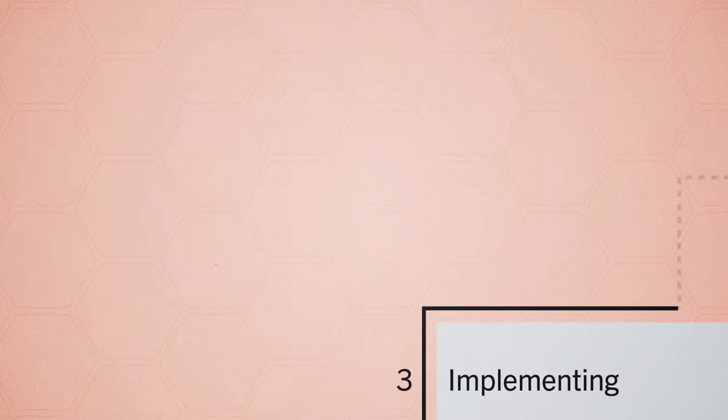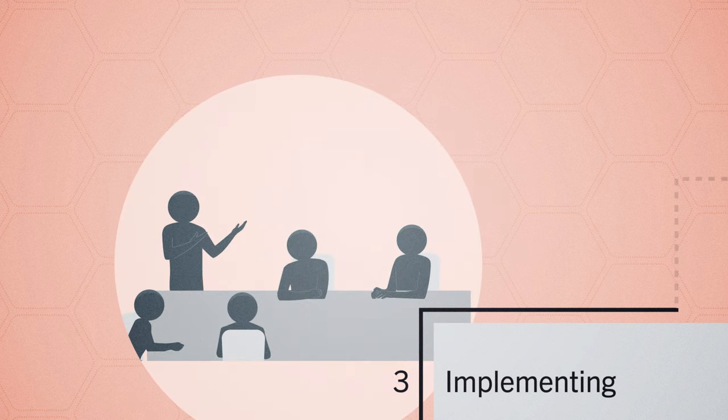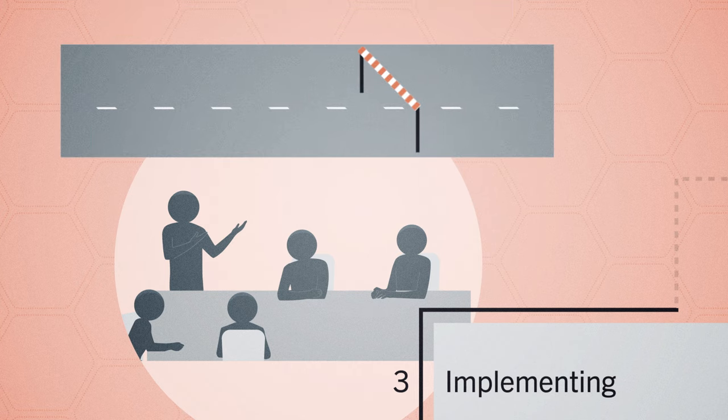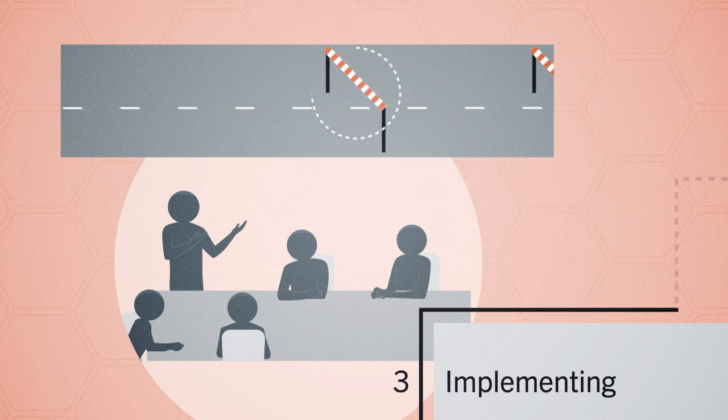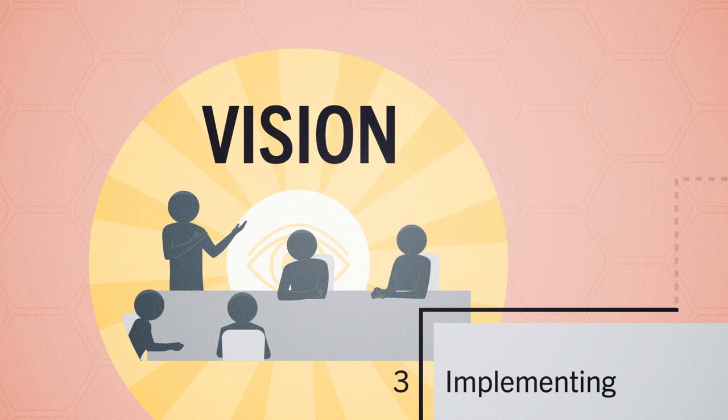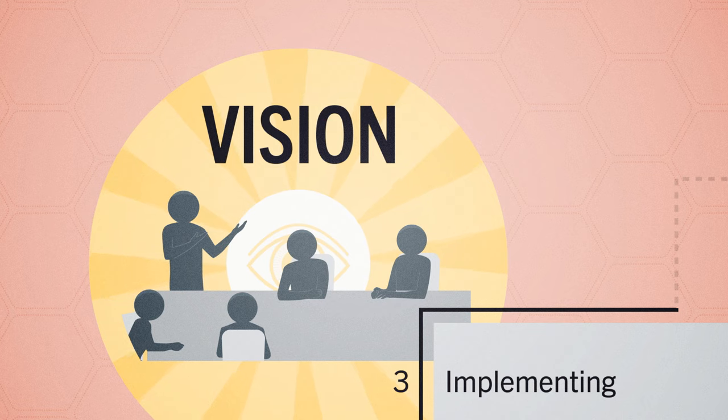Step three is implementing change. During implementation, change managers focus on motivating and empowering employees to achieve the initiative's goals. They should also try to anticipate roadblocks and prevent, remove, or mitigate them once identified. Reiterating the organization's vision is critical throughout the implementation process to remind team members why change is being pursued.